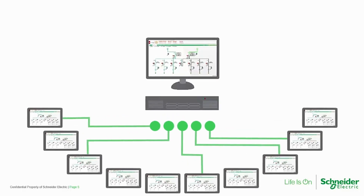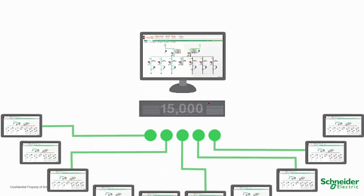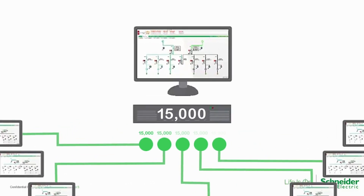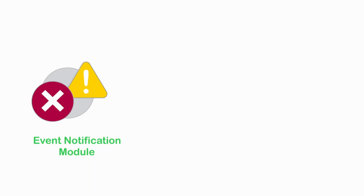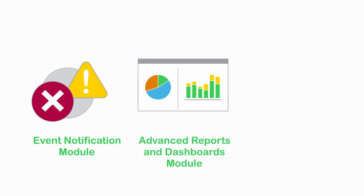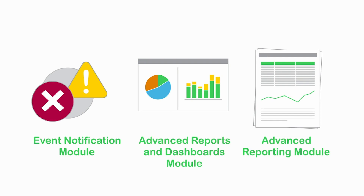The clients should be licensed with the same number of tags as the server. You may also have some add-on modules like the event notification module, advanced reports and dashboards, or advanced reporting modules. These can be added to your license order.